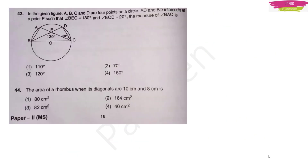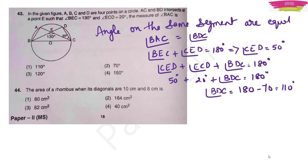In the given figure, A, B, C, D are four points on a circle. AC and BD intersect at E such that angle BEC = 130° and angle ECD = 20°. Angles on the same segment are equal, so angle BAC = angle BDC. Since BED is a straight line, angle CED = 180° − 130° = 50°. In triangle EDC, angle BDC = 180° − 50° − 20° = 110°. So angle BAC = 110°.